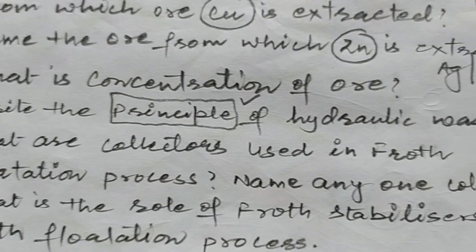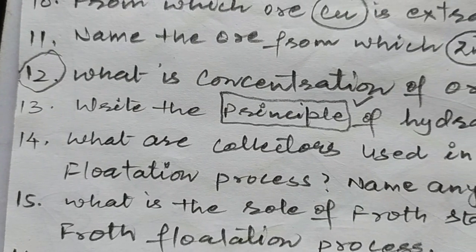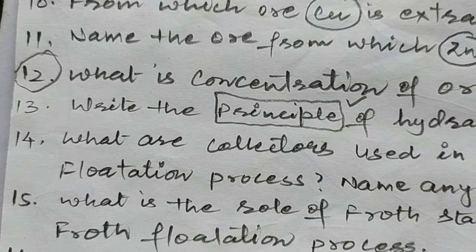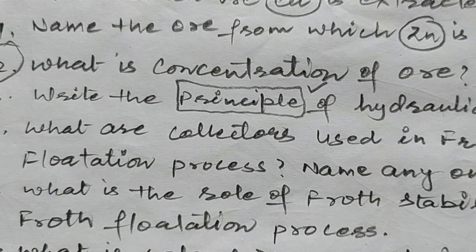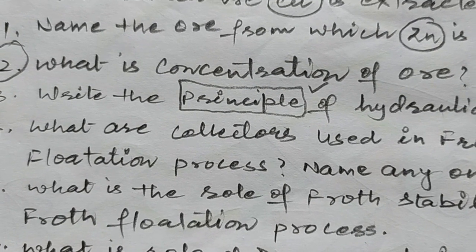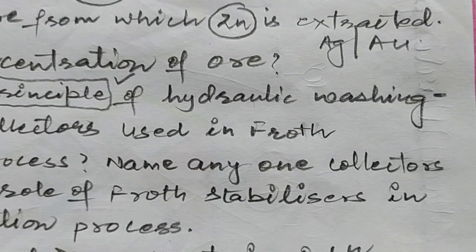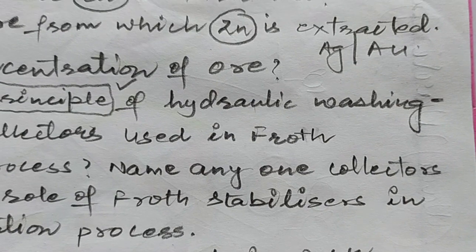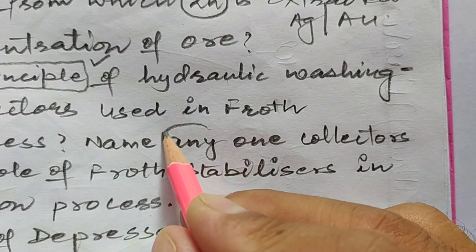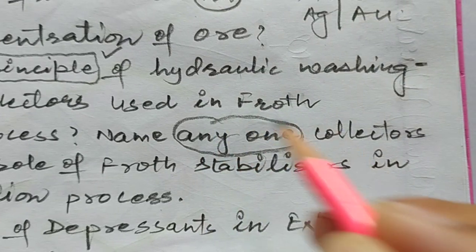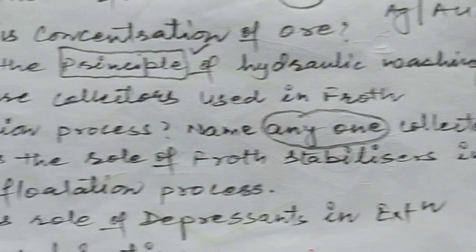Question number 14 asks: what are the collectors? You will see the name of a collector in memorization directly. What are the collectors used in the froth flotation process? Name any one collector. If you have an example, you can write it.